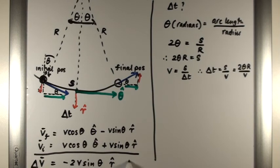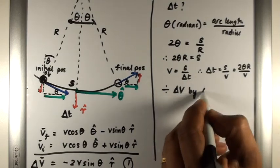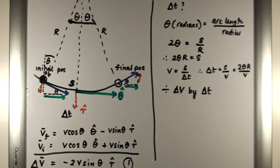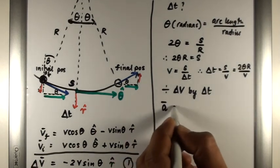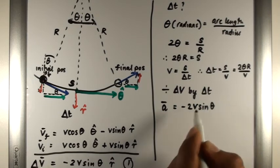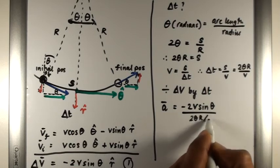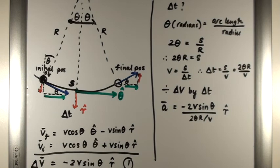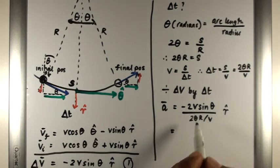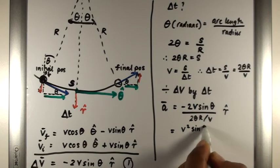If we now divide delta V by delta T, we get the acceleration. The acceleration is going to be minus 2V sine theta all over 2 theta R over V in the radial direction. And what we end up with is V squared sine theta over R over theta. Let's not forget the minus.